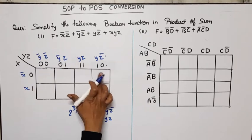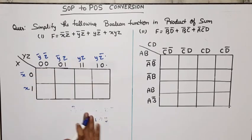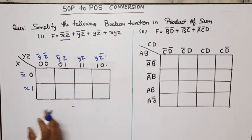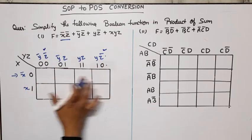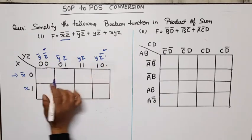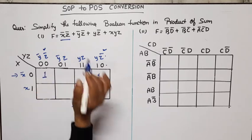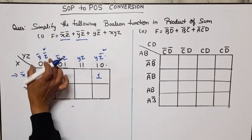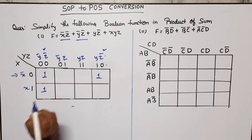Now let's plot the first term x̄z̄: x̄ means this row, z̄ means these two columns, so we place ones in those two cells. Next term ȳz̄: ȳz̄ is only this one column, meaning both rows are involved, so both cells in that column get a one.